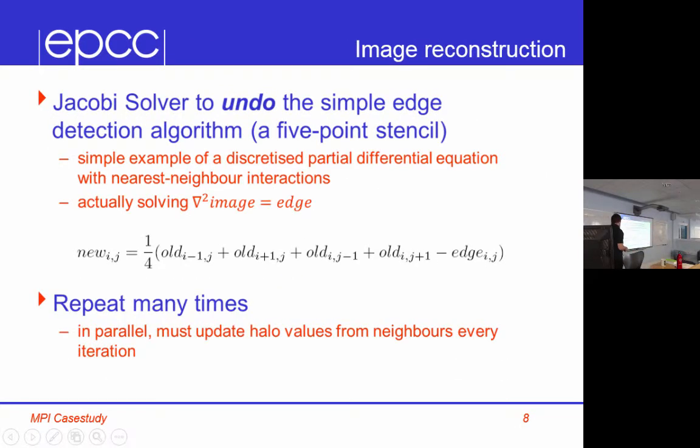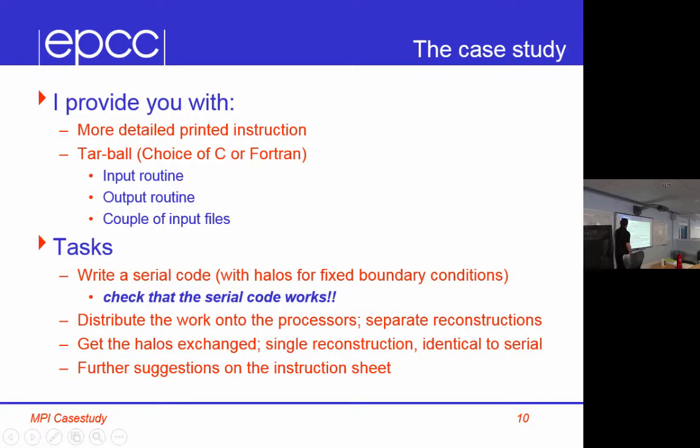Once you've done that, you can then complete the code by getting the halos exchanged. Then you're doing a single reconstruction, you're reconstructing the whole image, and you should get an answer which is identical to your serial code. So, there's further suggestions on the instruction sheet.